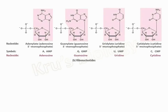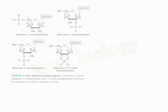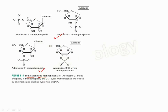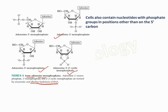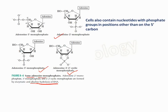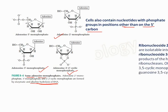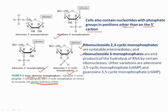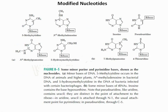The nucleotides and nucleosides in RNA have symbols adenine (A), guanine (G), uracil (U), and cytosine (C). Some adenine monophosphates include adenosine 2'-monophosphate, adenosine 3'-monophosphate, and 2',3'-cyclic monophosphate, formed by enzymatic and alkaline hydrolysis of RNA. Generally, the phosphate group is attached to the 5' carbon in the nucleotide, but cells also contain nucleotides with the phosphate attached to other carbons. Ribonucleotide 2',3'-cyclic monophosphate and ribonucleotide 3'-monophosphate are end products of RNA hydrolysis. Other variations include cAMP and cGMP.